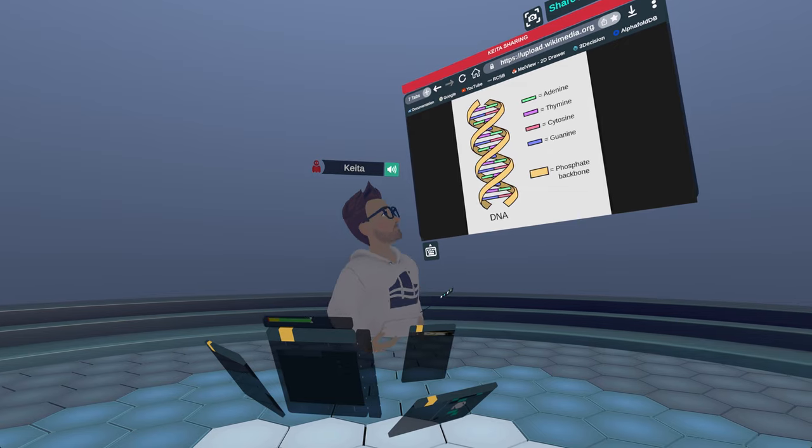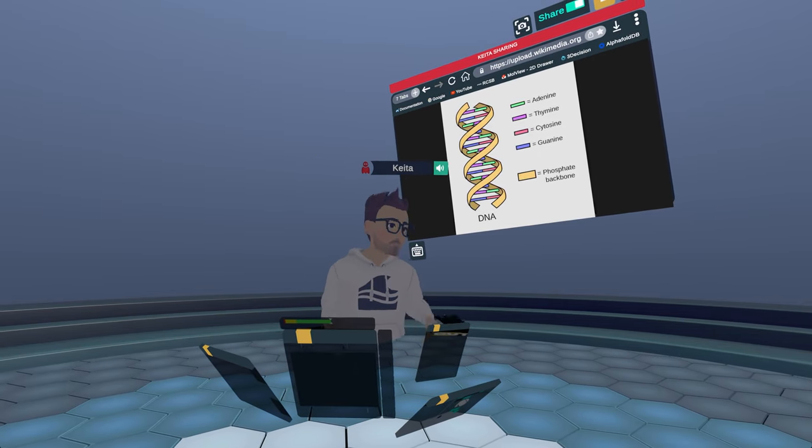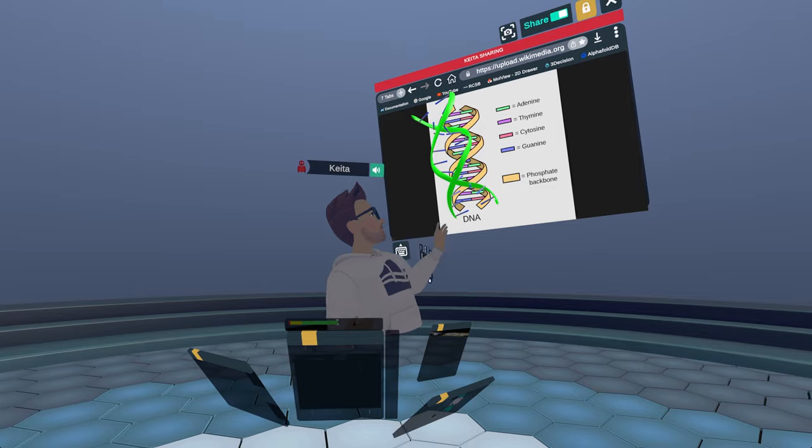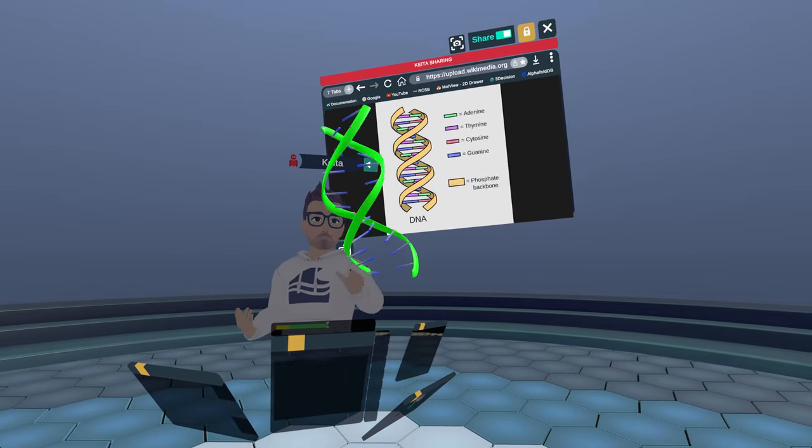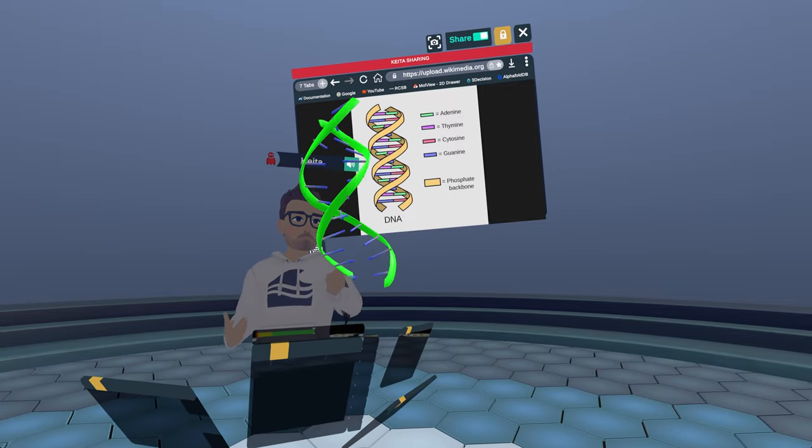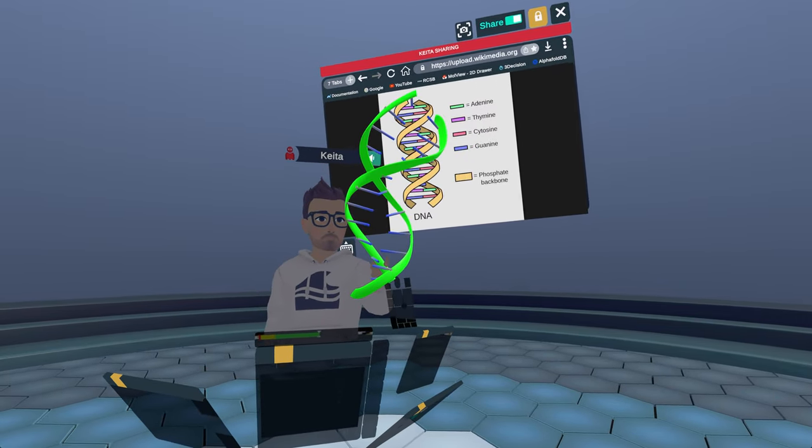Of course, that's boring to see in 2D. So because we're in VR and AR, we can actually see the 3D structure just like this in Nanom, which is always cool to see the actual 3D twisted ladder-like structure.